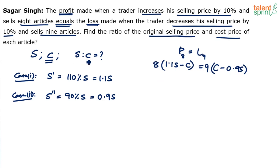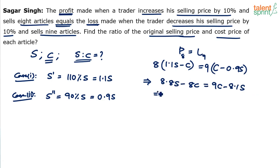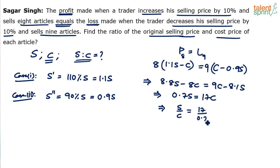Now simplify this to get S to C. Expanding: 8.8S minus 8C equals 9C minus 8.1S. So 8.8S minus 8.1S equals 9C plus 8C, giving 0.7S equals 17C. So S by C equals 17 by 0.7, which can be taken as 170 by 7.